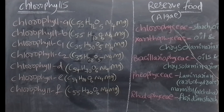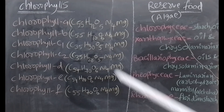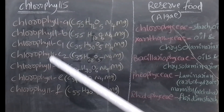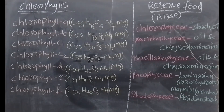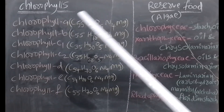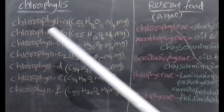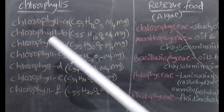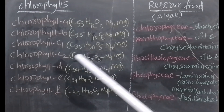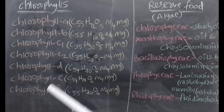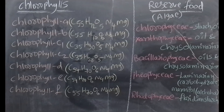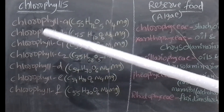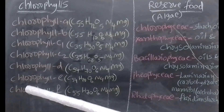The chlorophyll chemical structure includes Chlorophyll A, B, C1, C2, D, E, F. So chlorophylls A, B, C, D, E, F are present across algal groups.